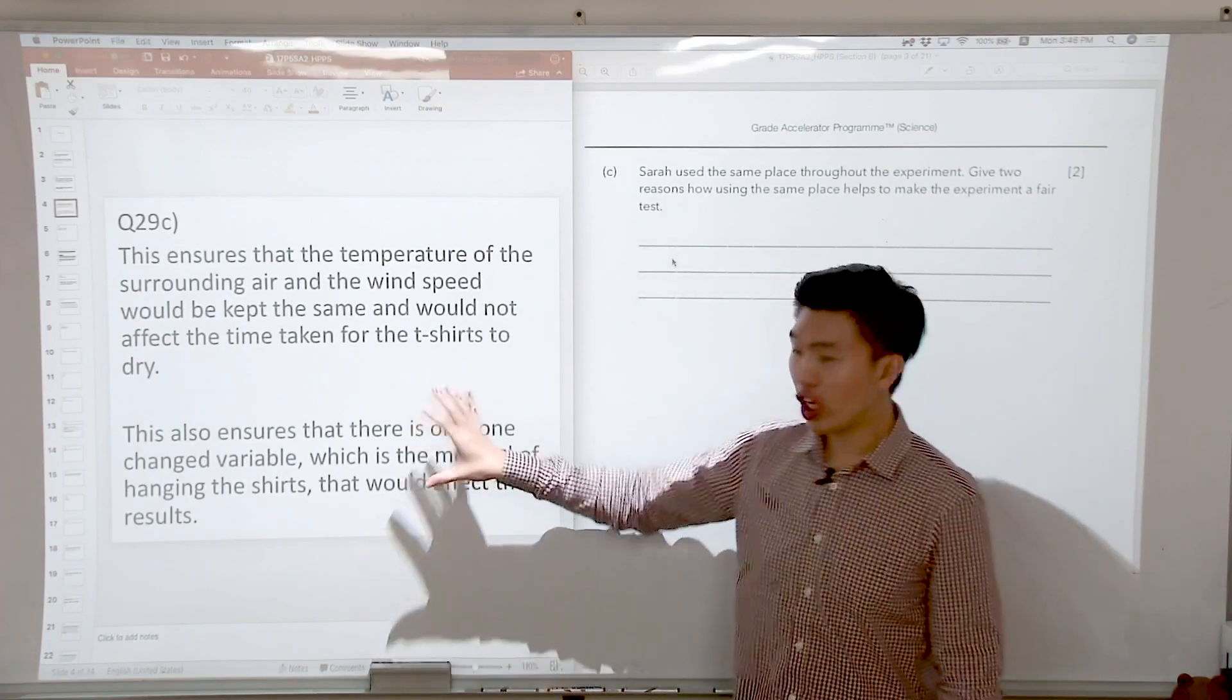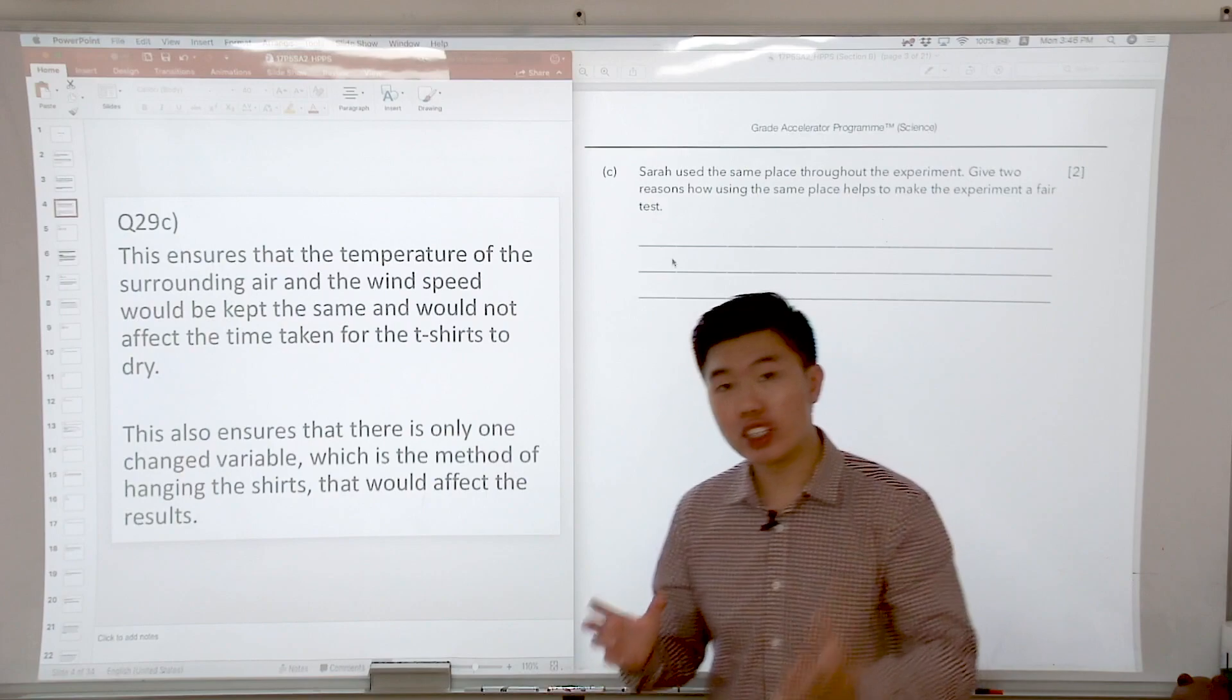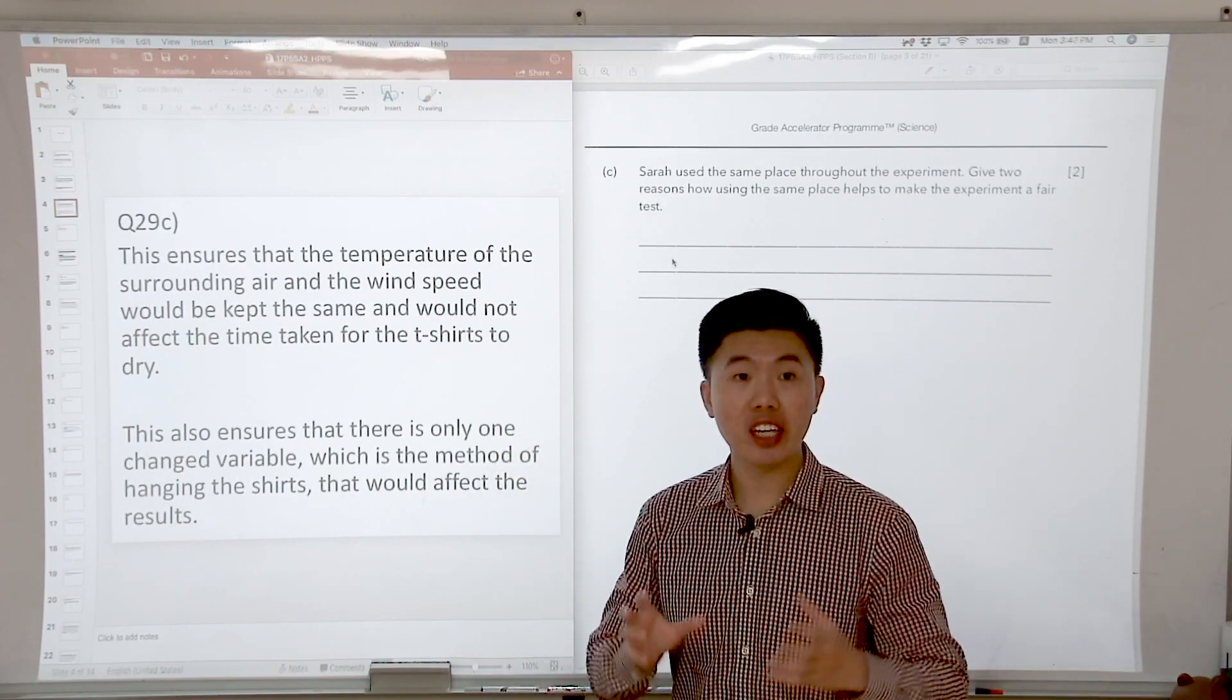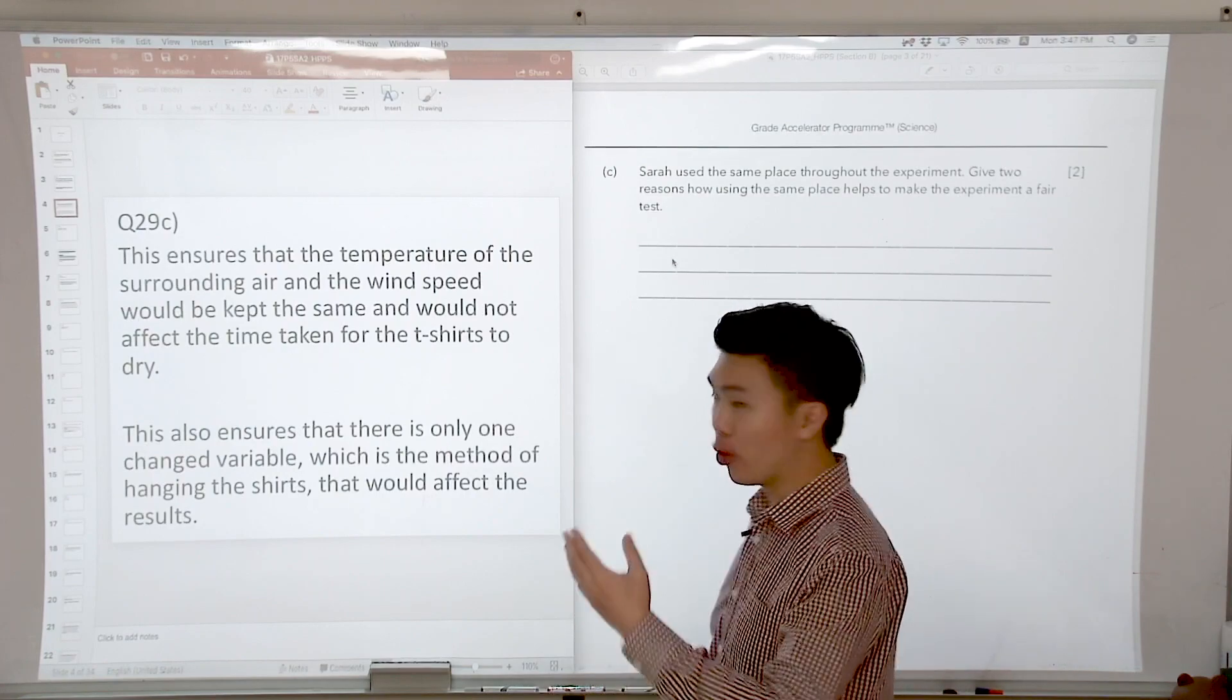And at the end of it, we ensure that there is only one change variable. So the moment we state one change variable, we need to specify what that change variable is, which is the method of hanging the shirts that would affect the results.